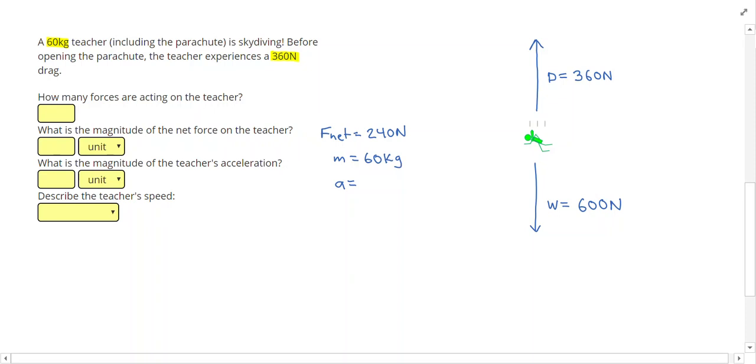Lastly, to find the acceleration, I can use Newton's second law and divide the net force by the mass. 240 divided by 60, or net force over mass, equals 4 meters per second squared. So we had two forces acting on the object with a net force of 240 N. The acceleration was 4 meters per second squared.